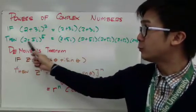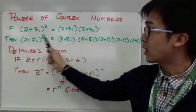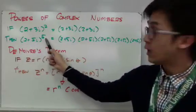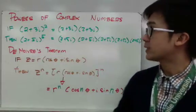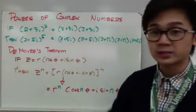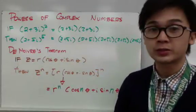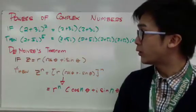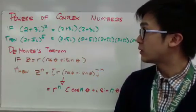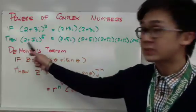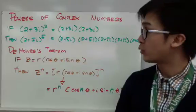If we have 2 plus 5i raised to the fifth power, to simplify this complex number raised to a power, we simply multiply 2 plus 5i by itself five times. As you can see, the process is pretty tedious if you're going to raise a complex number to its power. So for today, we're going to learn a theorem or formula so we don't need to do the tedious process of multiplying 2 plus 5i by itself according to its power.